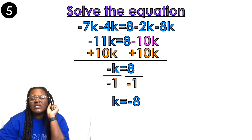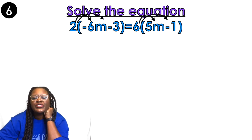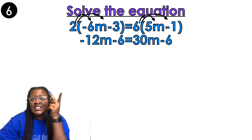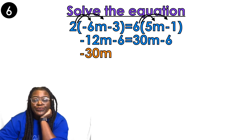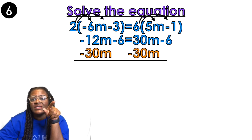Now slide number 6. I'm going to distribute, distribute, distribute, distribute — a lot of distribution going on. 2 times negative 6 is negative 12, 2 times negative 3 is negative 6. Then 6 times 5 is 30, and 6 times negative 1 is negative 6. Now I move the variables together — moving the 30 to be with the 12. Negative 12 plus negative 30 gives me negative 42. I bring down the negative 6, and the 30s cancel out, then bring down the negative 6.